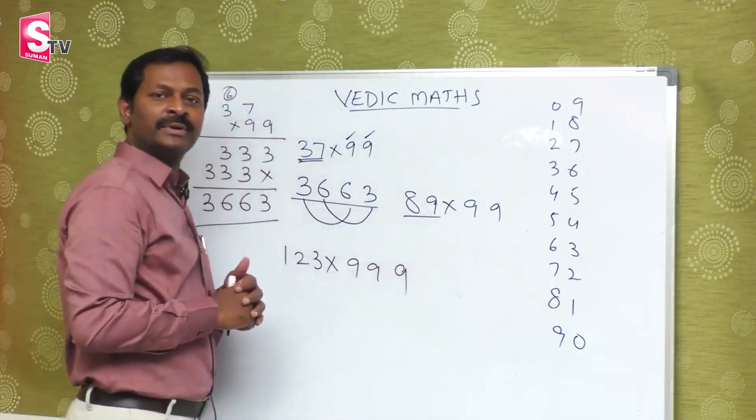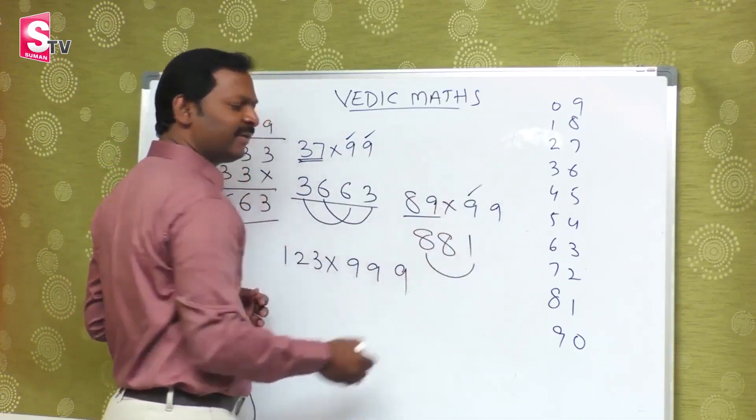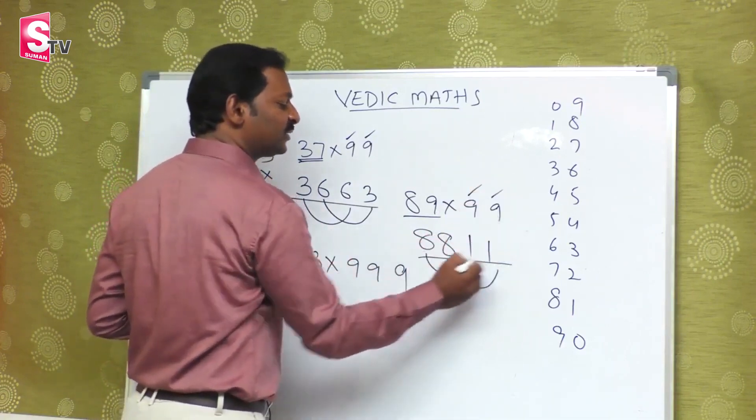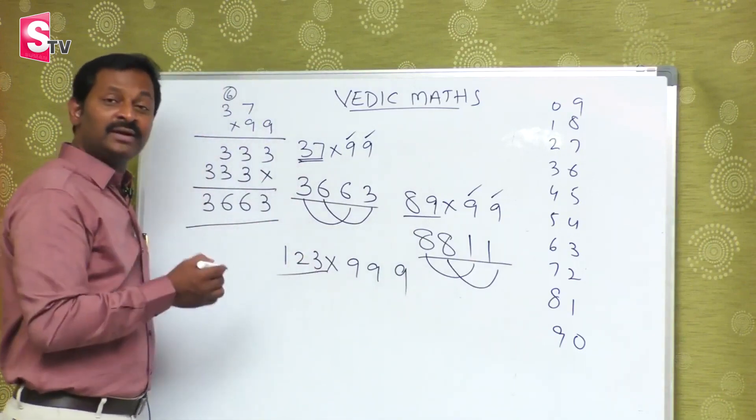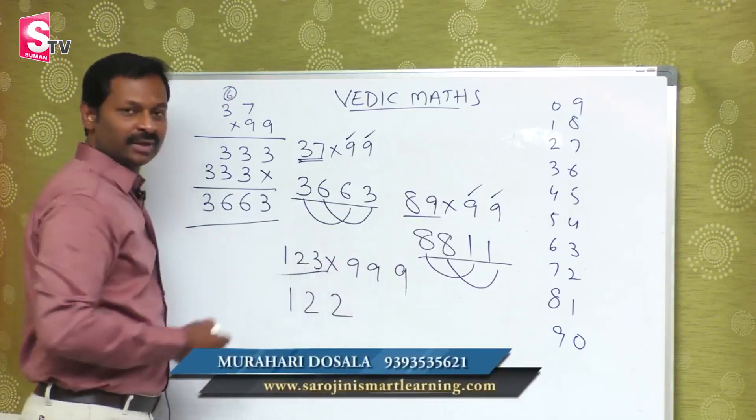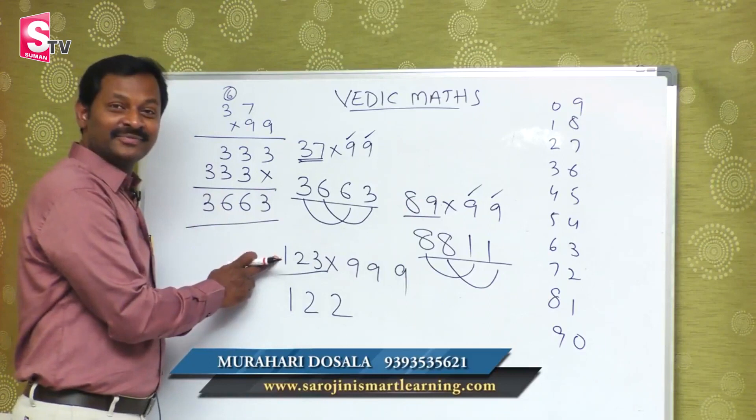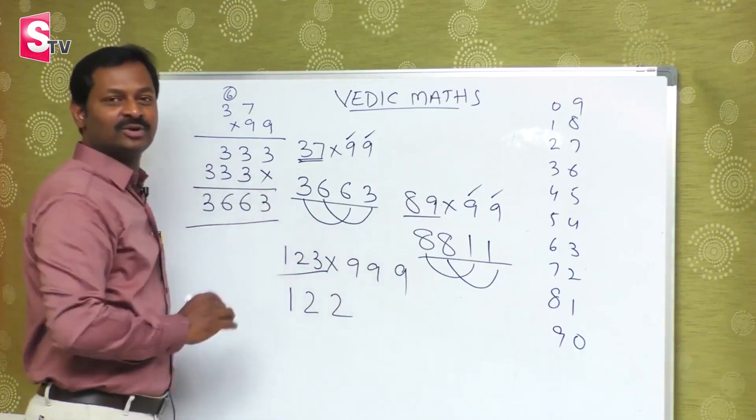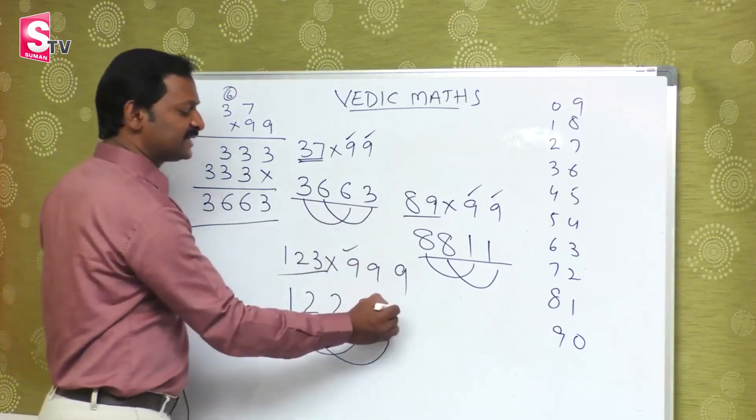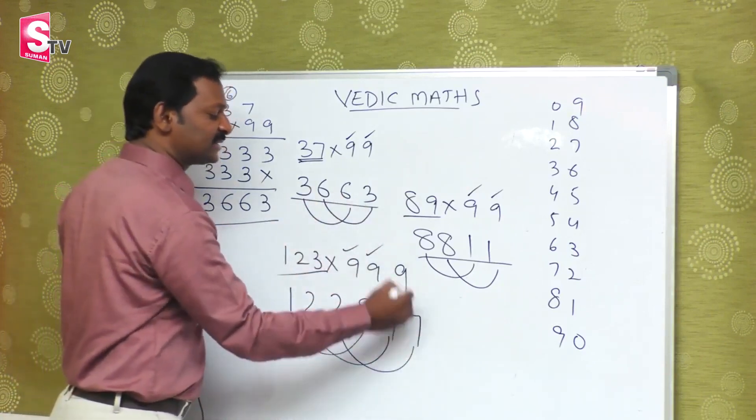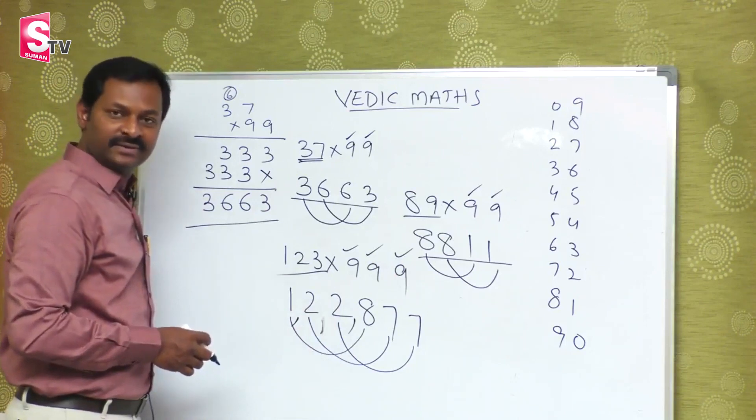Let's do another example with 89. One less is 88. The answer is 122,877. We decrease by one number and the units place always adjusts.